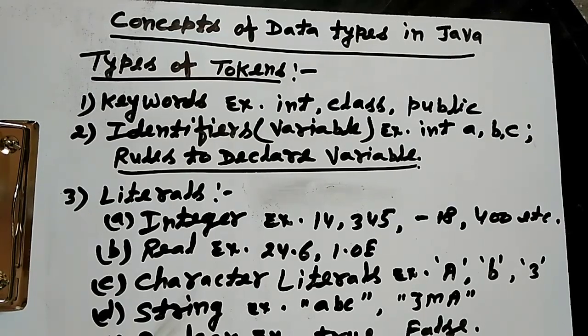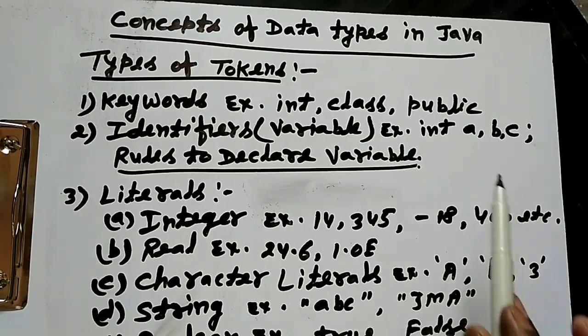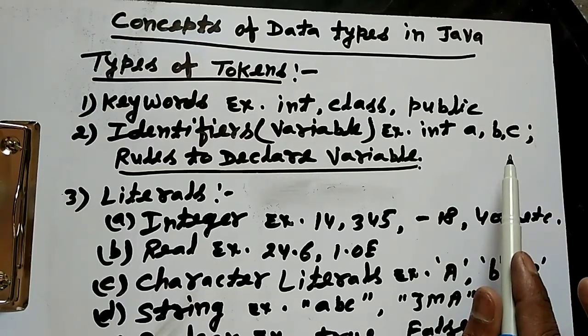Suppose we write int a, b, c. These are the identifiers.